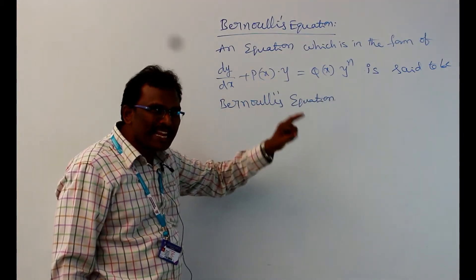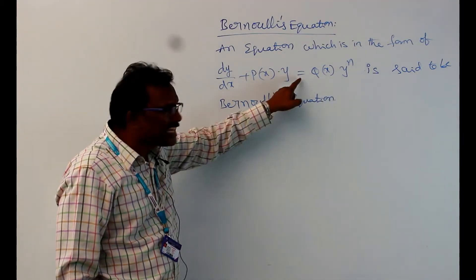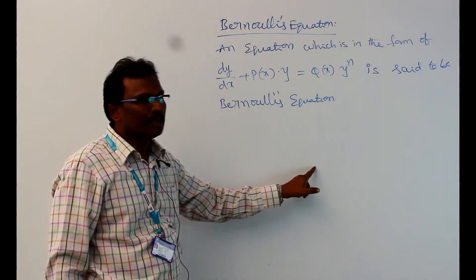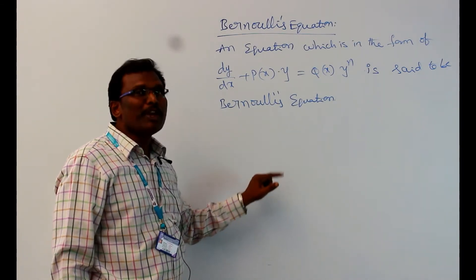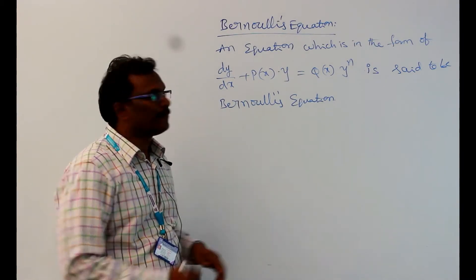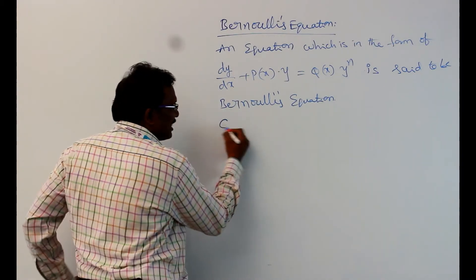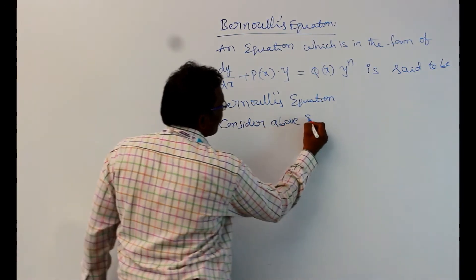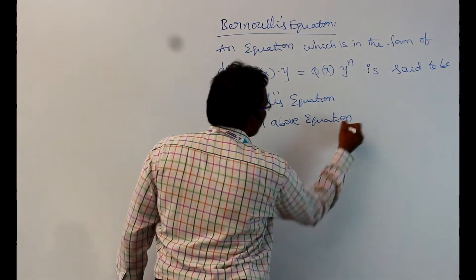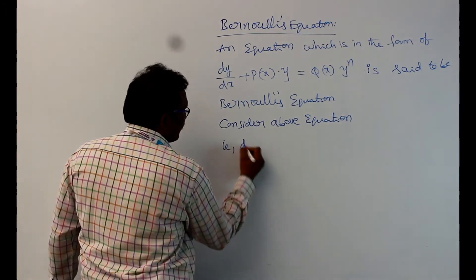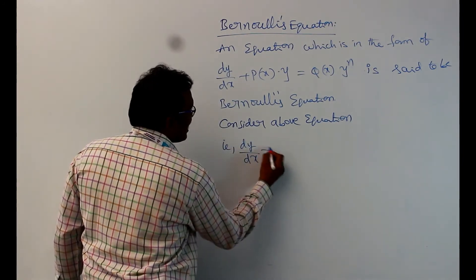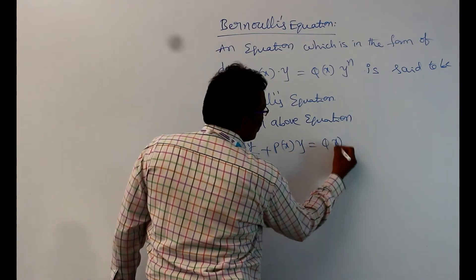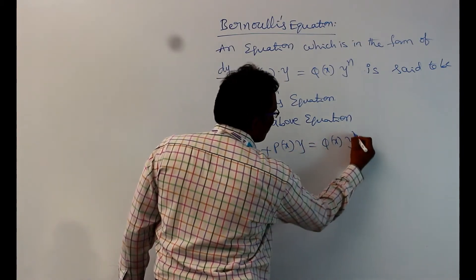First of all, we reduce this equation into a linear differential equation, and then we find its solution. Consider the equation dy/dx + P(x)·y = Q(x)·y^n, which we call equation 1.